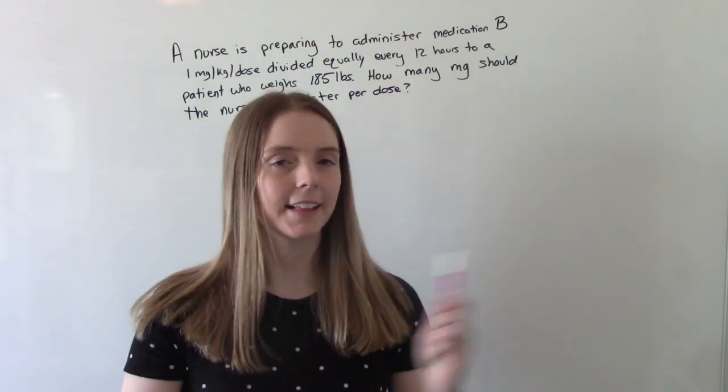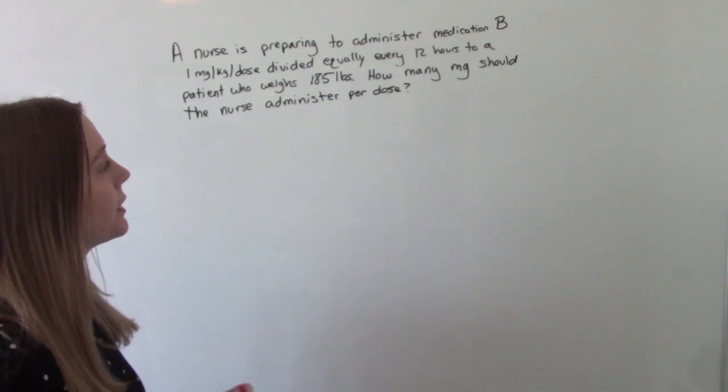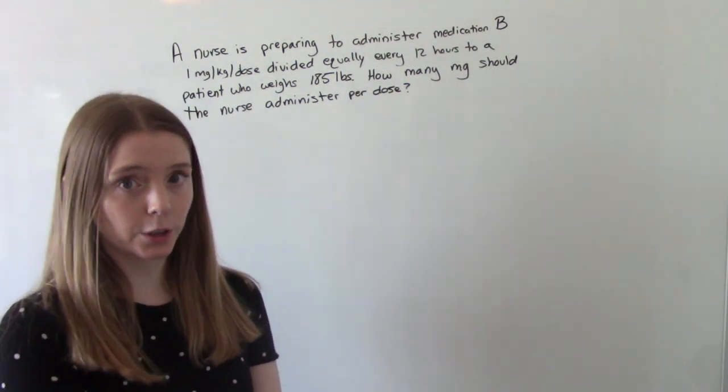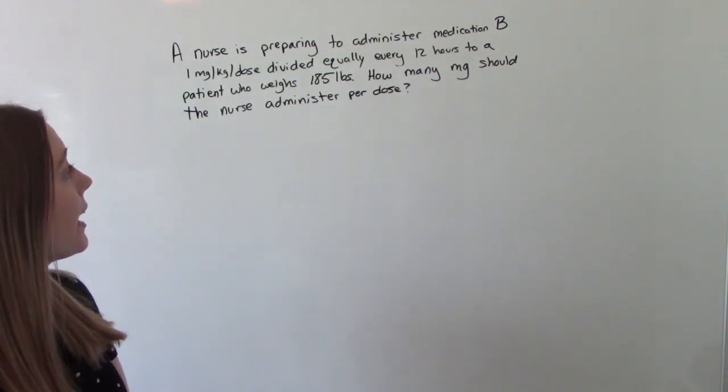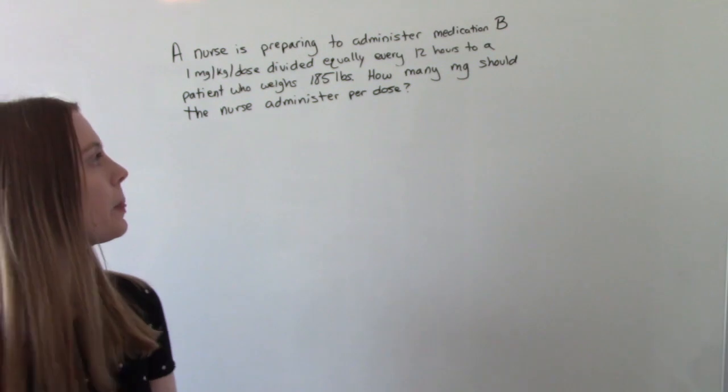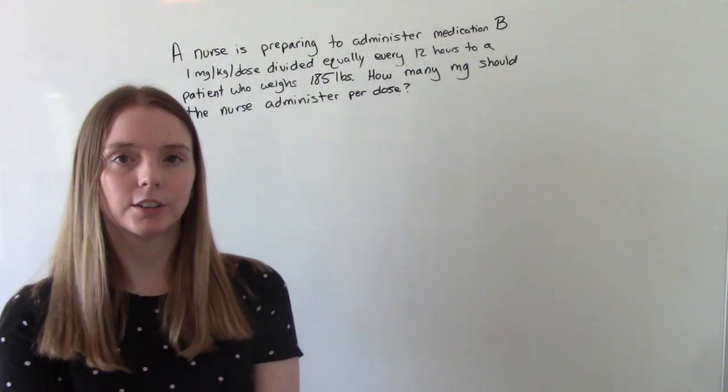So that's our answer for this one is 5.6 ml's. Let's try another. So the nurse is preparing to administer medication B, 1 mg per kg per dose, divided equally every 12 hours to a patient who weighs 185 pounds. How many mg should the nurse administer per dose?